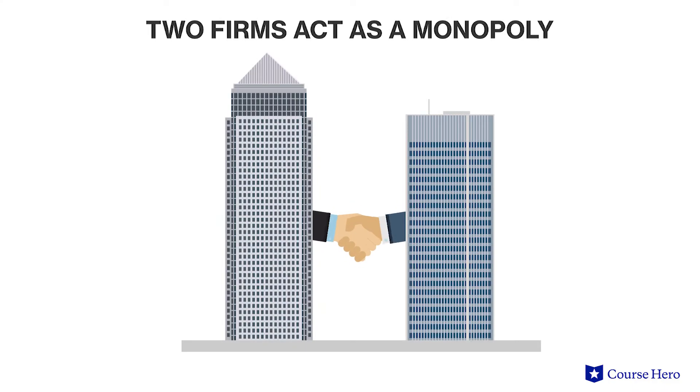Price fixing and price wars can occur in other oligopolies besides just duopolies, if more than two companies control a large portion of market share. If the two firms in a duopoly collude to manipulate the market, they act as a monopoly, with all of the attendant negative effects on competition.